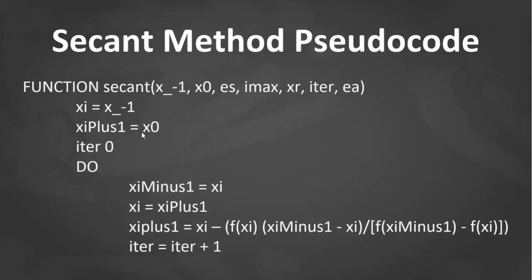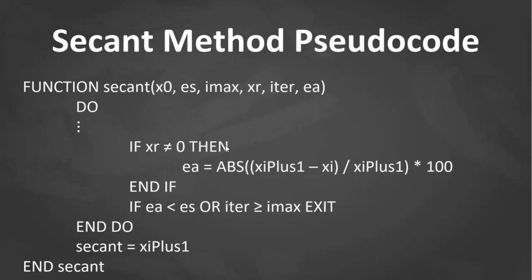Okay, so pseudocode for the Secant method. Since there are two values initially, store these two as the old values. Then compute for the new value or new root estimate using this formula. Then update with the previous values and repeat.